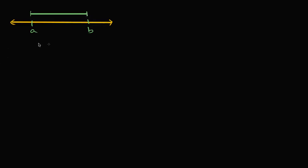Well, I could just take the larger of these two numbers, which is going to be B, and then subtract out the smaller. So I subtract out A, and I'll be left with this distance. This will give me a positive value. When I want a distance, I just think in terms of a positive value — how far apart are these two things? But I was only able to know to do B minus A because I knew that B was greater than A. This is going to give me a positive value.